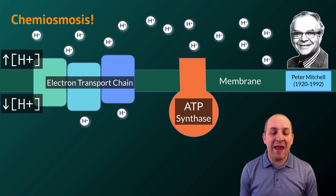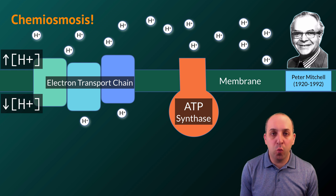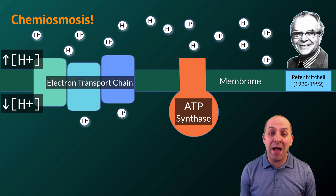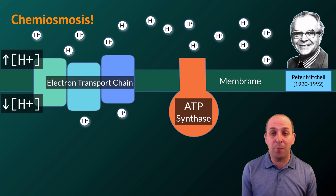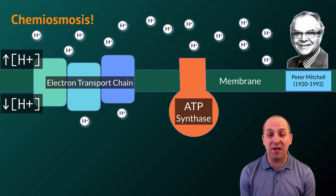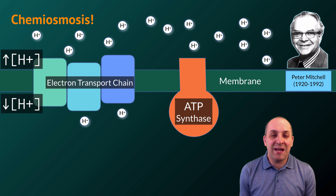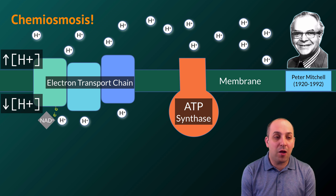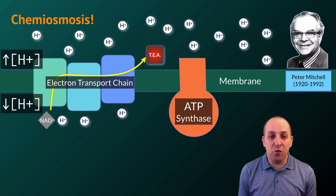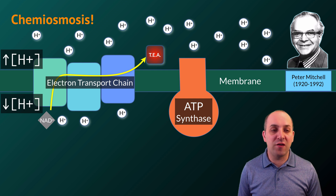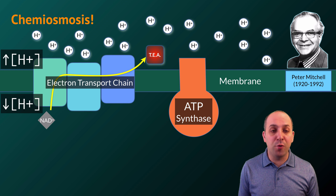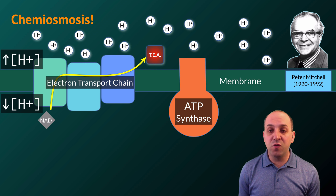Protons are highly charged and cannot move through the phospholipid bilayer. While diffusion would generally drive protons from the region of high concentration to low concentration, protons cannot do this by interacting with the bilayer directly. The proton gradient is maintained through the action of the electron transport chain. Electron carriers like NADH deposit electrons and return to their oxidized forms by feeding electrons into the ETC proteins, which eventually reduce a terminal electron acceptor. These pump proteins use the free energy from electron flow to move protons from one side of the membrane to the other, which is where the proton gradient comes from.